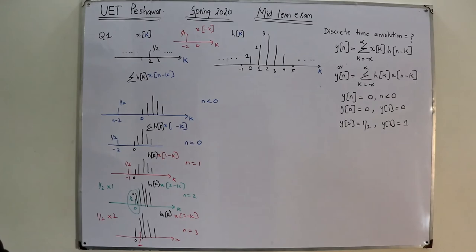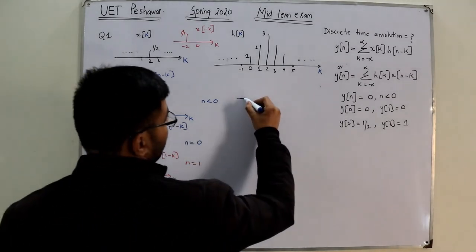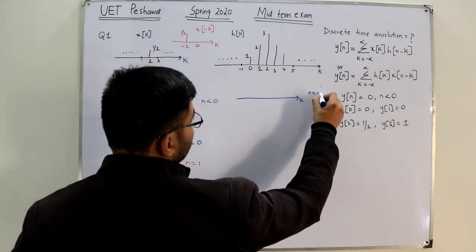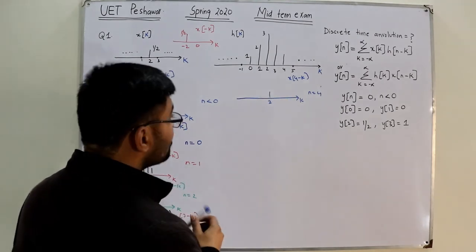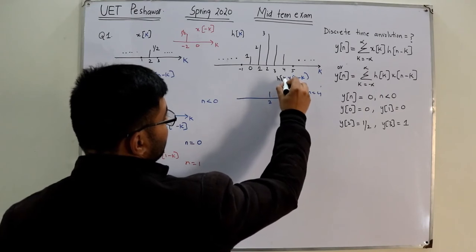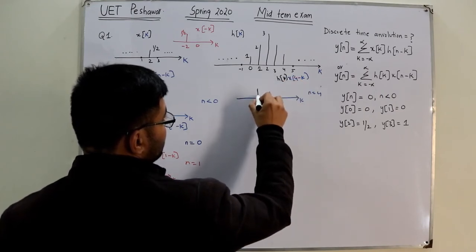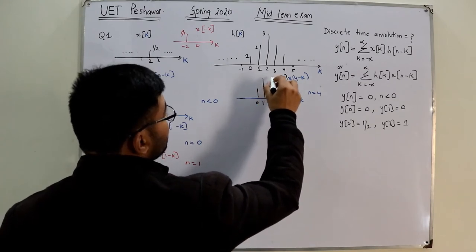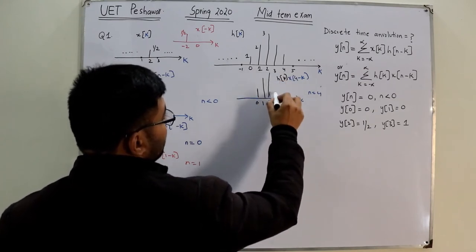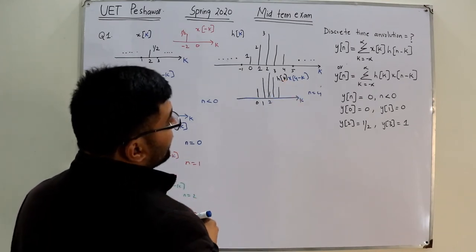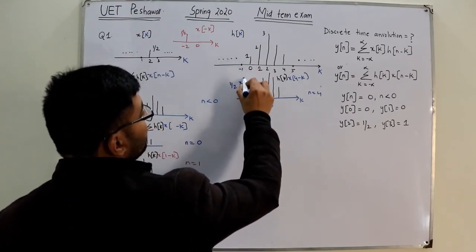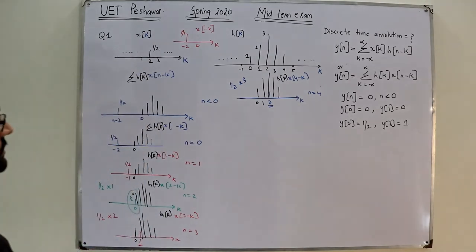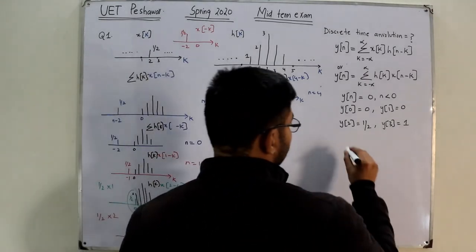For n equal to four: X of 4 minus K is located at two, with value one-half. H of K has its maximum at two, which is three over two. We have a single overlap at two — one-half multiplied by three over two — so y of four equals three over two, which is 1.5.